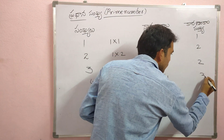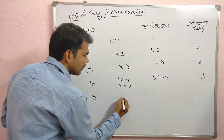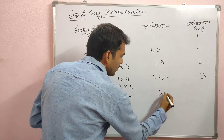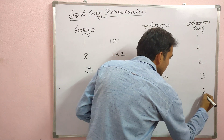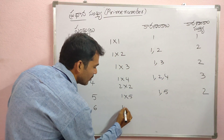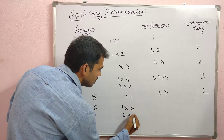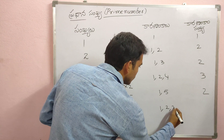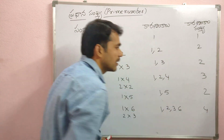So, the first one is 3. Now, the second one is 5. 1 is 5. So, the second one is 2. So, the second one is 6. 1 is 6. 2 is 3. So, the second one is 2, 3, 4. So, the second one is 4.